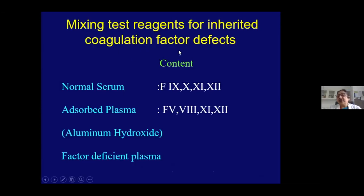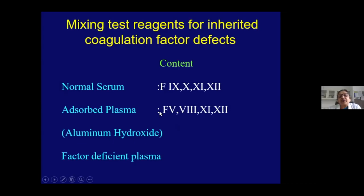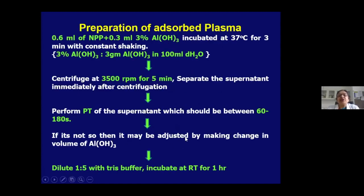If factor-deficient plasma is not available, mixing reagents can be used. Serum contains factors 9, 10, 11, and 12. Adsorbed plasma — adsorbed with aluminum hydroxide — contains factors 5, 8, 11, and 12. Alternatively, if funds allow, use direct factor-deficient plasmas. Preparation of adsorbed plasma is relatively easy and economical to do in the lab.